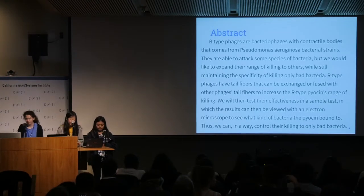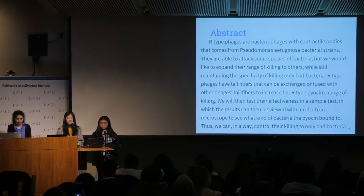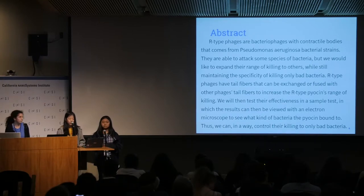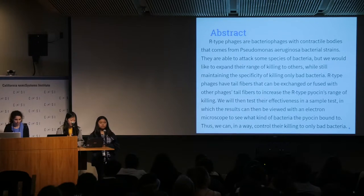Today we'll be talking about R-type bacteriophages. The problem is that broad-spectrum antibiotics are targeting all types of bacteria, including good bacteria, and we don't want that. To combat this, precision antibiotics were created to target specific bad bacteria, and R-type Pyocin is one of those. However, its killing range is very limited to only a few types of bacteria, so what we want to do is expand that killing range while still keeping it contained to killing only bad bacteria.